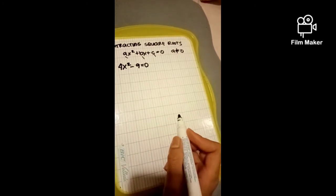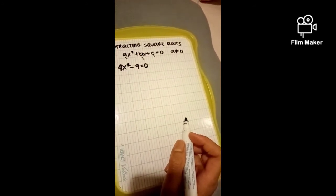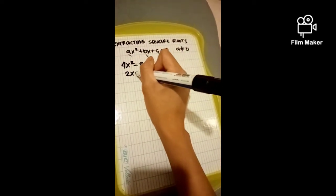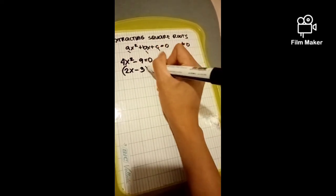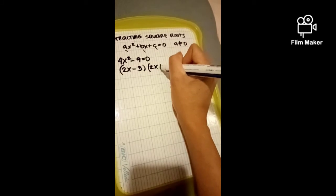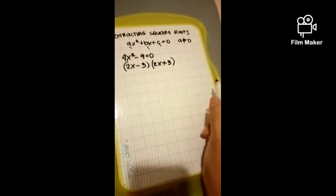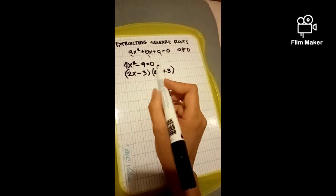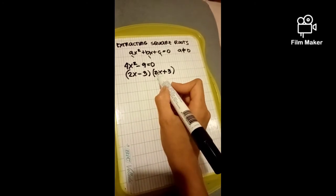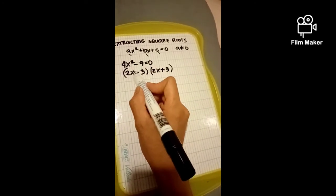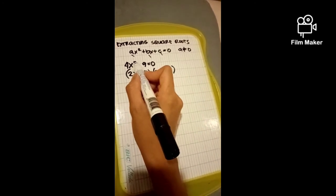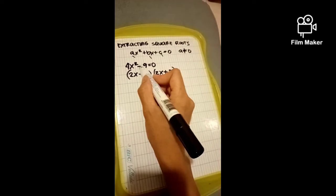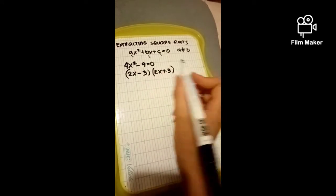The factors of 4x squared minus 9 equals 0 are (2x minus 3) and (2x plus 3). Why do we get these factors? Because 2 times 2 equals 4, x times x equals x squared, and negative 3 times positive 3 equals negative 9.